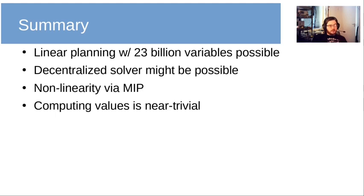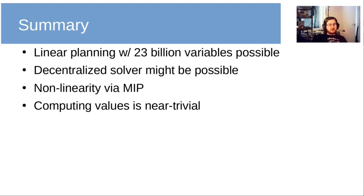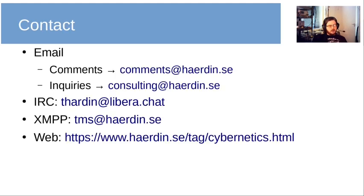In summary: linear planning with 23 billion variables seems very possible. We might be able to have a decentralized solver, but this depends very much on the structure of the economy. We can deal with non-linearities using mixed integer programming — or mixed integer planning. And finally, computing values is nearly trivial, so that's not what I'm very concerned with. My contact information is here — it's easiest to get a hold of me on IRC as usual. Questions?